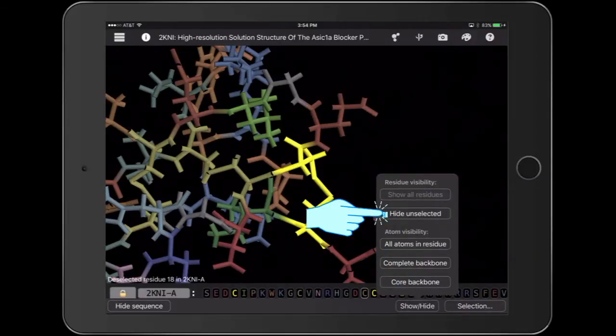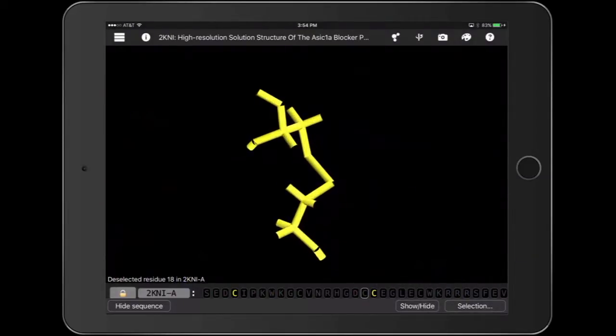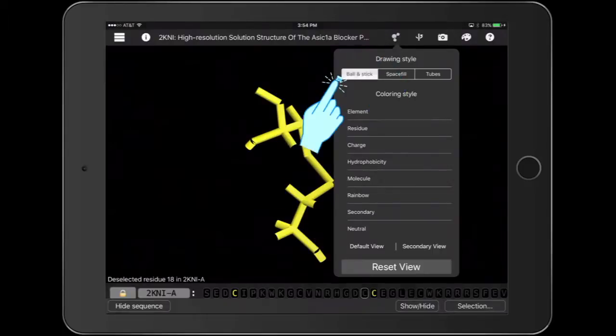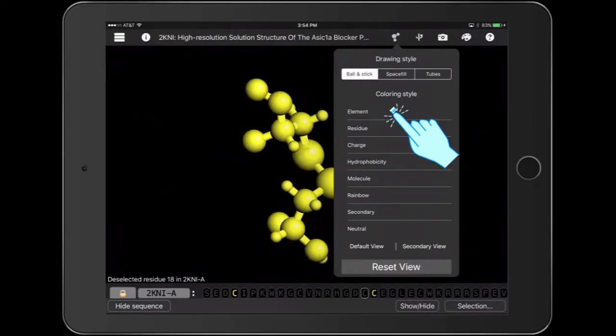To focus on the bond, I'm going to hide everything else now and change the drawing style to ball and stick and the coloring style to element.